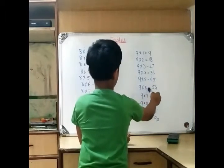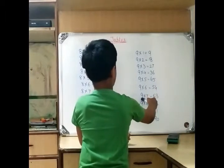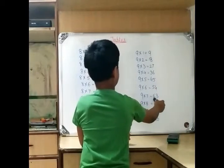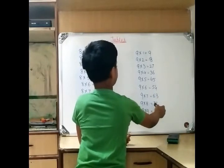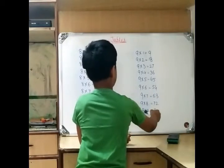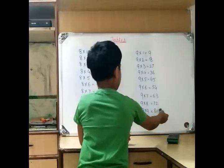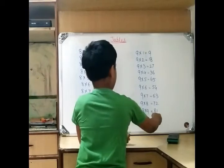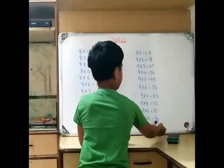6 9s are 54, 7 9s are 63, 8 9s are 72, 9 9s are 81, 10 9s are 90.